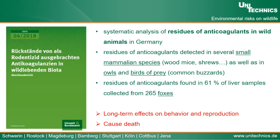A research conducted by the German Ministry of Environment — called the Systematic Analysis of Residues of Anticoagulants in Wild Animals in Germany — found that residues of anticoagulants were detected in several small mammals such as wood mice and shrews, as well as in owls and birds of prey. Residues of anticoagulants were also found in 61 percent of liver samples collected from 265 foxes. The research found long-term effects on the behavior and reproduction of non-target animals, and eventual death.